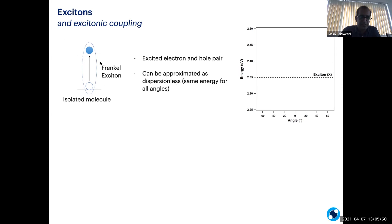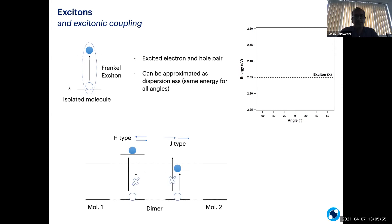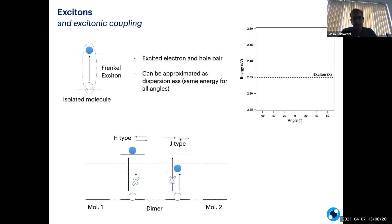No matter how you excite, at what angle you excite, the band gap and energy of excitation remains the same. When we bring two molecules together, the excitonic behavior can change. Most of us have looked into H and J type aggregates: H type aggregates allow higher energy excitations and are accompanied with low radiative PLQI. In J type aggregates, going from head to tail, this arrangement allows low energy excitations, and we often see really high PLQIs and often superradiance as well.